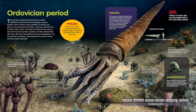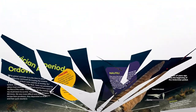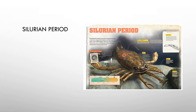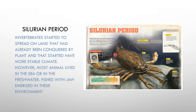The next period is the Silurian period, which covered the least amount of time of all the periods. The Silurian period had 2.5-meter-long sea scorpions known as eurypterids. Invertebrates started to spread on land and land plants came. Most animals still lived in the sea, and freshwater fishes with jaws emerged, like Poraspis.